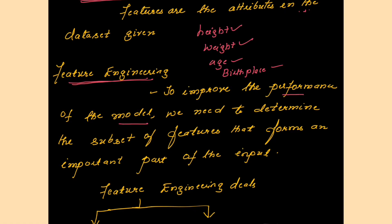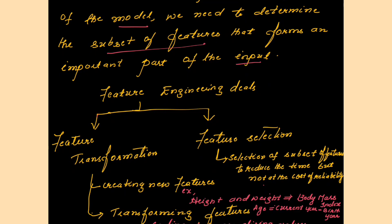For that, we need to determine the subset of features that forms an important part of the input. There are several features, but you try to identify a subset of features contributing towards the maximum information. Feature engineering can be dealt with using feature transformation and feature selection. The topic dimensionality reduction is included in the title — dimensionality reduction is feature selection.